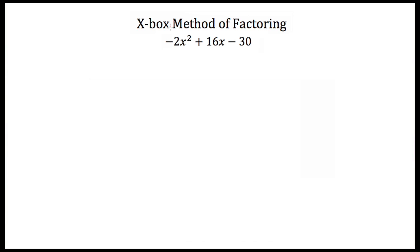You also want to make sure that the leading coefficient, or the number that's being multiplied by x squared, has to be positive. If it's not positive, then you need to factor out a negative 1 from all three of these terms before you can use the Xbox method of factoring.